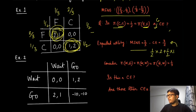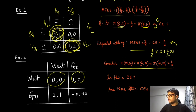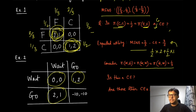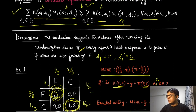Similarly, you can look at the wait-and-go game with traffic lights. A different correlated strategy puts probability one-third each over three strategy profiles: 'wait-wait', 'wait-go', and 'go-wait'. The question is whether this is a correlated equilibrium. You can also check whether the commonly used traffic-light strategy — putting one-half on 'wait-go' and one-half on 'go-wait' and zero for the other two — is a correlated equilibrium.